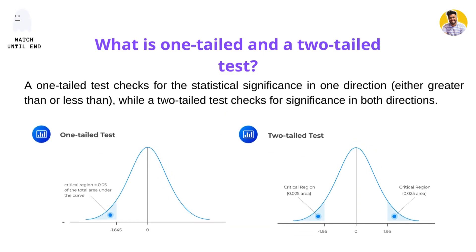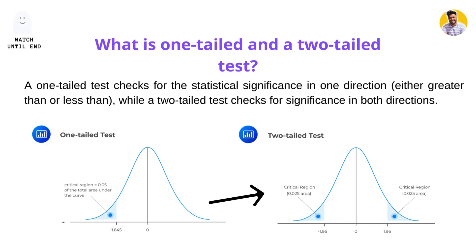Our next interview question is: what is a one-tail test and what is a two-tail test? A one-tail test checks for statistical significance only in one direction — either greater than or less than — while a two-tail test checks for significance in both directions. In the one-tail test, the critical region is 0.05 and can be placed on the left side or the right side. In the two-tail test, we divide the significance value by two: if you take 0.05, it becomes 0.025 on the left side and 0.025 on the right side.